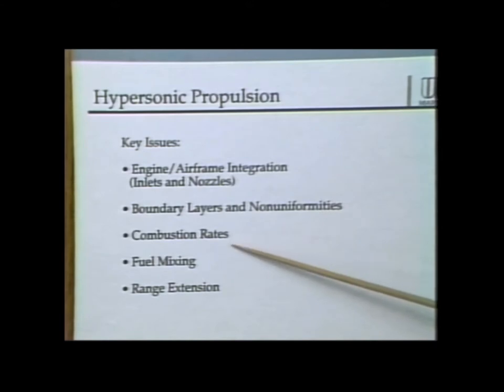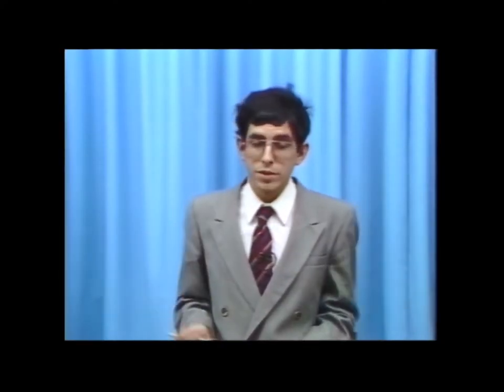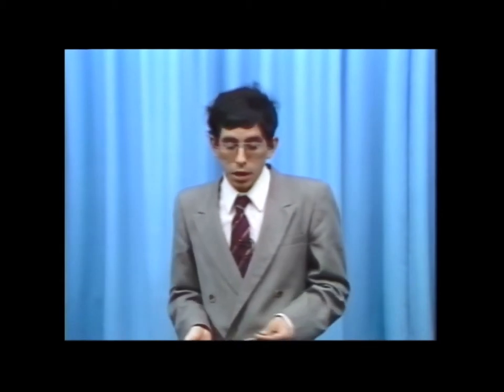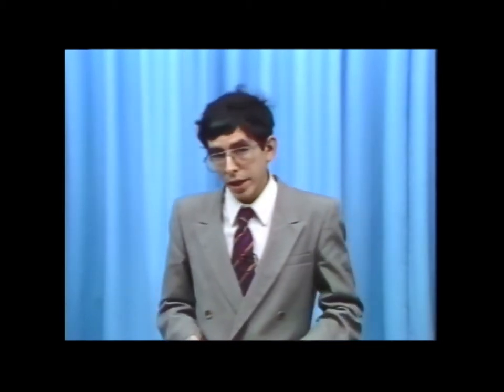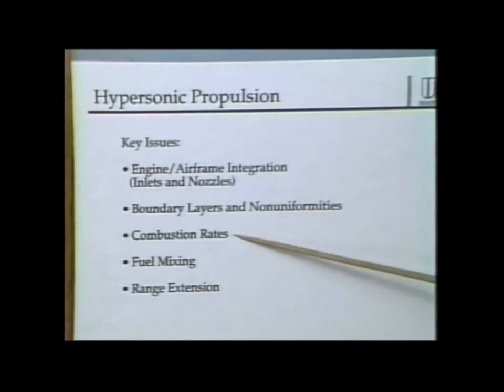Combustion rates are a very key issue for hypersonic vehicles. At about one atmosphere and 1,000 degrees, hydrogen burns in about a millisecond. If our engine box has a length of about three meters and we're traveling about 10,000 meters per second — halfway through a trajectory to orbit — the flow moves through the engine in about a millisecond. So if combustion takes any longer, we won't get sufficient combustion inside the engine. We're constantly playing the game of getting fuel to mix and burn fast enough before it blows out the back.